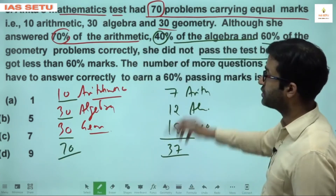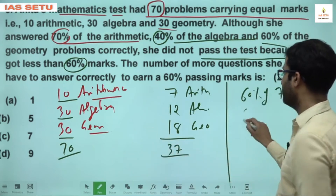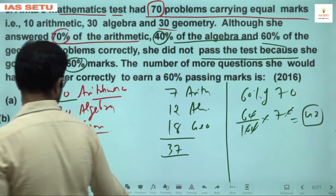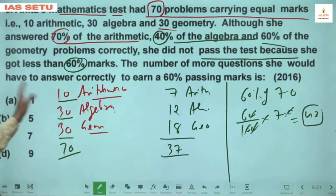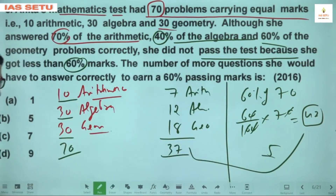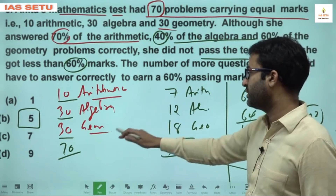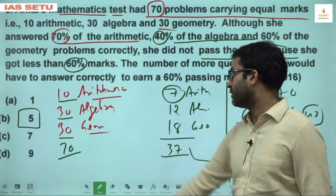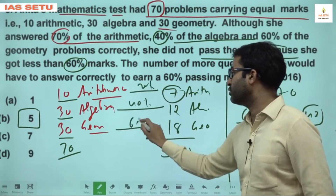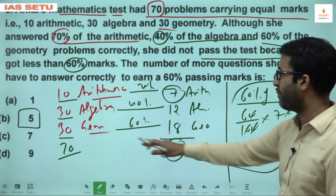She did not pass because she got less than 60%. The passing mark is 60% of 70 = 42. She answered only 37 correctly. The number of additional questions she would need to answer correctly to earn a 60% passing mark is 42 − 37 = 5. Question 6 answer is B.